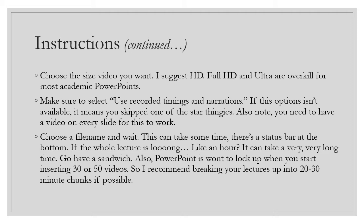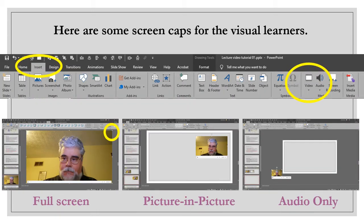Then go to File, Export, Create a Video. Choose the size you want — I suggest HD; full HD and ultra are overkill for most academic PowerPoints. Make sure to select 'Use Recorded Timings and Narrations.' If that option isn't available, it means you missed one of the steps — go back and check. Choose a file name and wait; there's a status bar. For a very long lecture it can take a long time, and PowerPoint can lock up if you have 30 or 50 videos. I recommend breaking your lecture into 20 to 30 minute chunks.